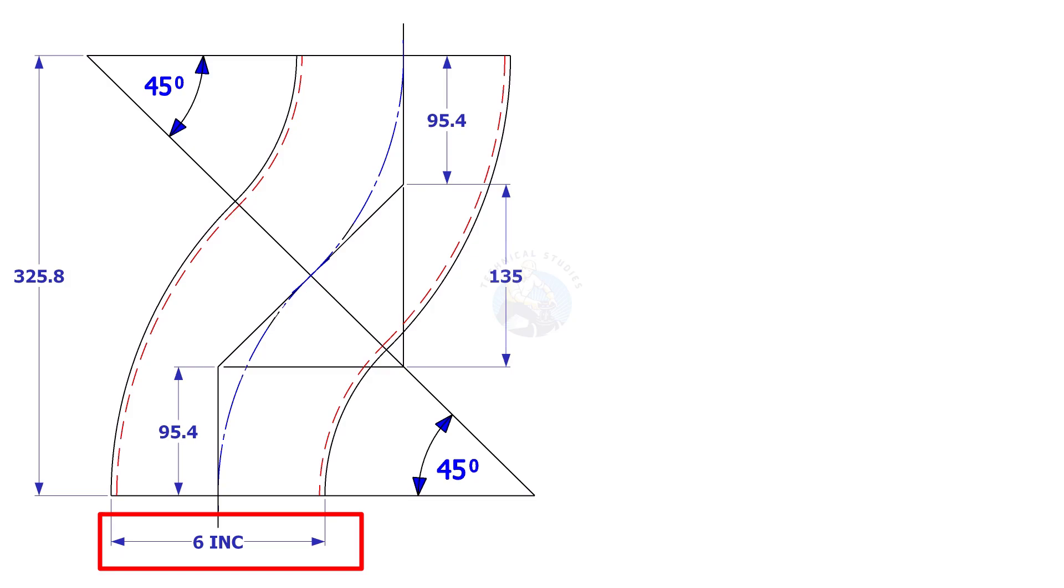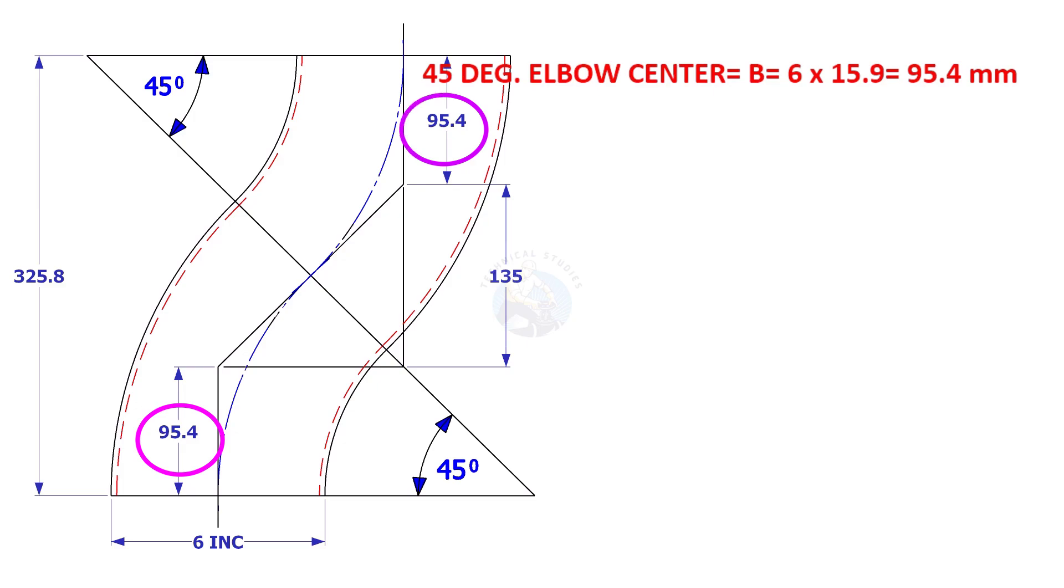In another example, the size of the elbow is 6 inch. 6 inch 45 degree elbow center is 6 multiplied by 15.9, which is 95.4 millimeters.